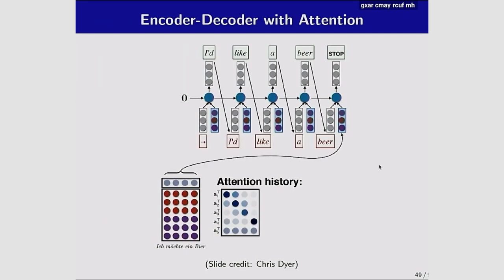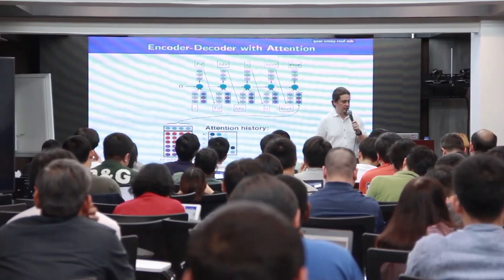In practice, when generating the second English word, the attention vector a_2 places more probability mass on the German word 'muster' and less on others, so the model generates 'like' — aligned to 'muster'. At the next time step the model attends to a different part of the source. The attention mechanism provides dynamic, step-specific context rather than a single static vector.